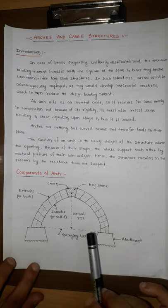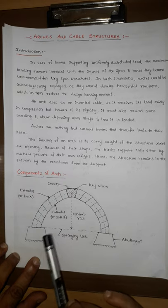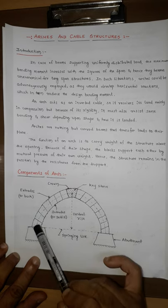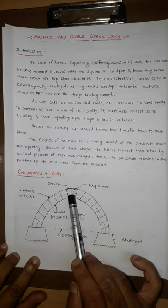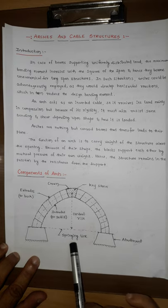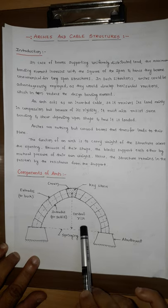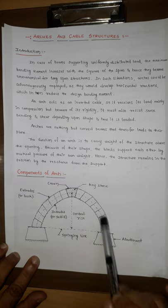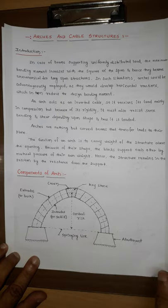Now let us look at the different components of an arch. The inside surface of the arch is called the intrados or soffit. The outside surface is called the extrados or back. The topmost or highest point is called the crown. The horizontal distance between the two supports is called the springing line, and the distance from the center of the crown to the springing line is called the central rise. The supports are called abutments.